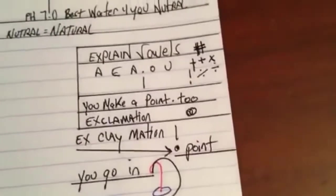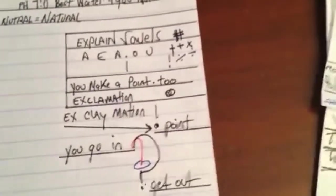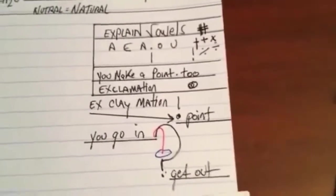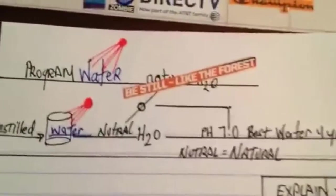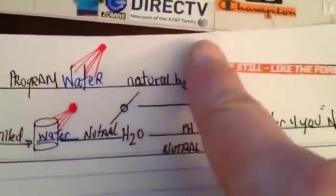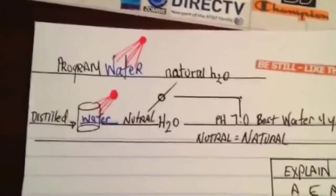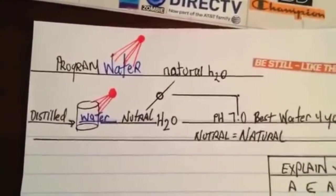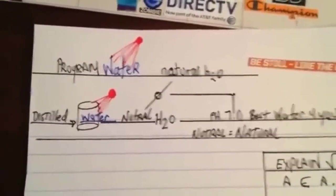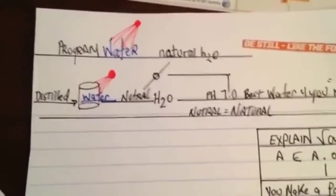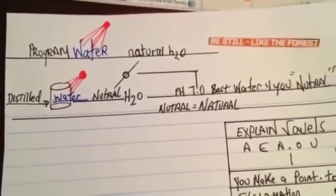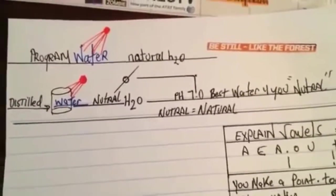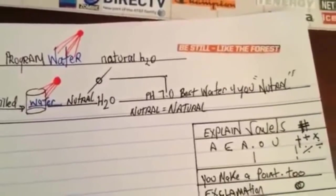I recommend that before you drink water you program it. Take a glass of neutral water, like distilled water. Neutral is natural - h2o not acidic, not alkaline. If you look online you can separate water into acidic and alkaline. People say acidic is better for your outside of your body.